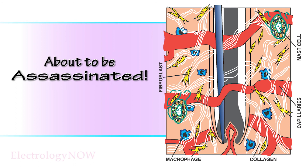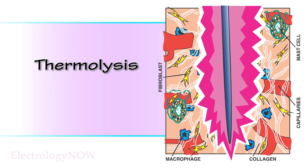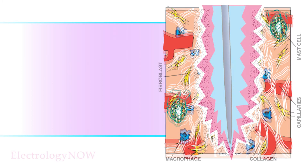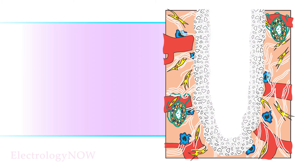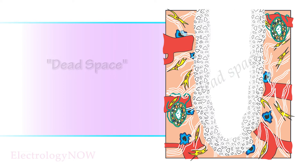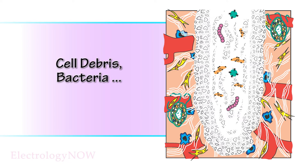So you insert your needle and you're about to assassinate the follicle. Whichever modality you use — electrolysis, thermolysis, or the blend — you destroy the follicle. The area that you just treated is now called the dead space. Not a very nice term, but that is the medical term. The destroyed follicle contains dead cells, clotted capillaries, and some bacteria, but not for long.